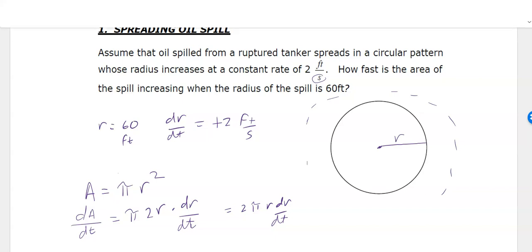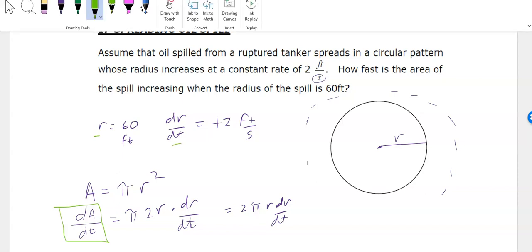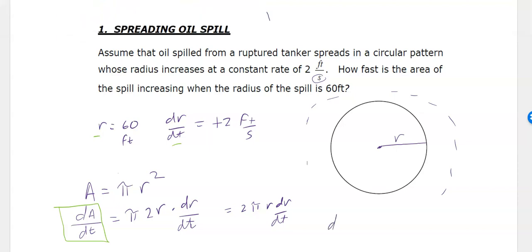I now have what I call my governing equation. What are they asking me to find? How fast is the area? So they want me to find dA/dt. Let's see what other information I have. I have r and I have dr/dt. I can plug those into my derivative equation. I get dA/dt equals 2π times 60 feet times 2 feet per second. When I multiply this out, I get 2 times 60 is 120 times 2, I get 240π feet squared per second. That is the rate of increase of the area when the radius is 60 feet and the radius is increasing at 2 feet per second.